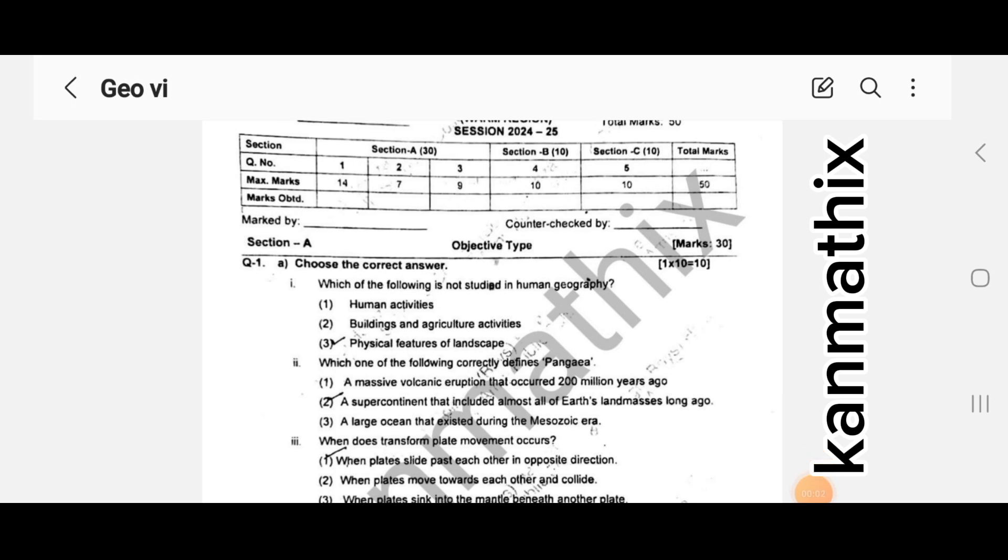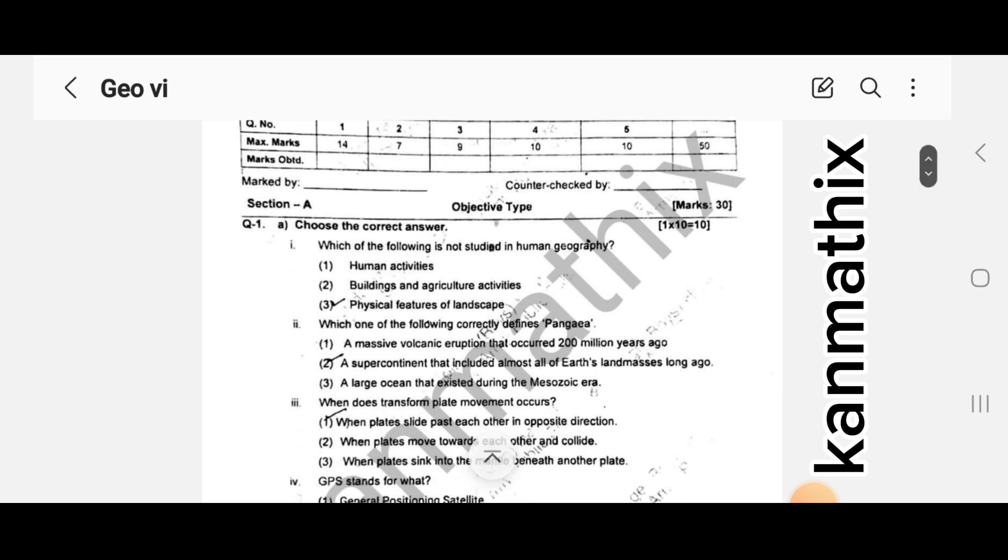Assalamu alaikum dear students, hope you all are fine. I'm sharing the answer key of Geography paper for Grade 6 first term examination 2024-25. Your paper comprises of 50 marks: Section A was 30 marks, Section B was 10 marks, and Section C was also 10 marks.